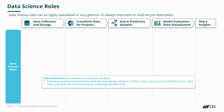Data scientists are more focused on the coding for the actual analyses. They're proficient in advanced statistical methods, which are used to create analysis and predictions from data. Their coding tends to focus on analyzing the data itself.